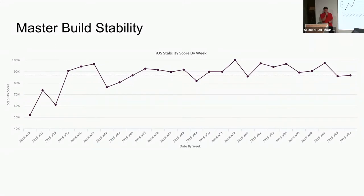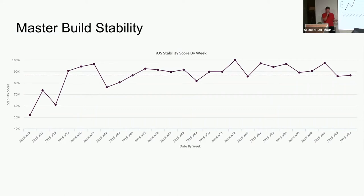Another thing we track is master build stability. Theoretically, since we have all these PR checks, master build should always pass. If it's not a hundred percent, it's not good — and then we can analyze why. Most of the time it's flaky tests.